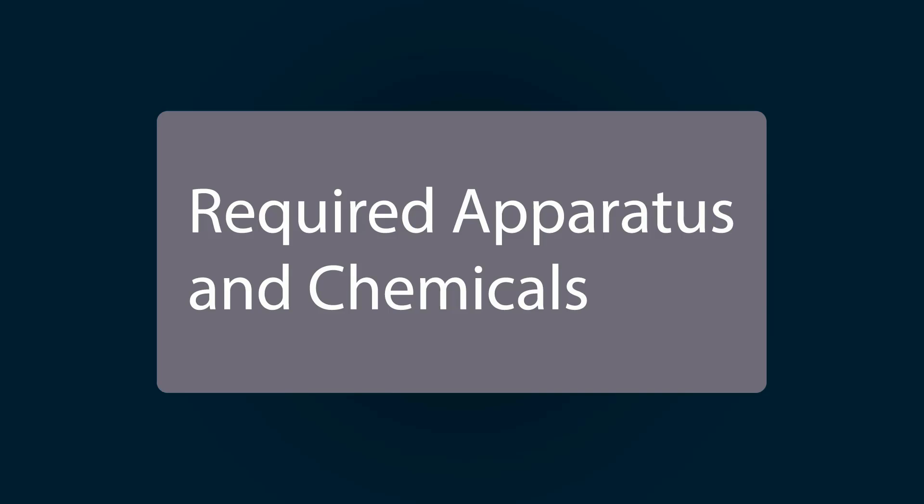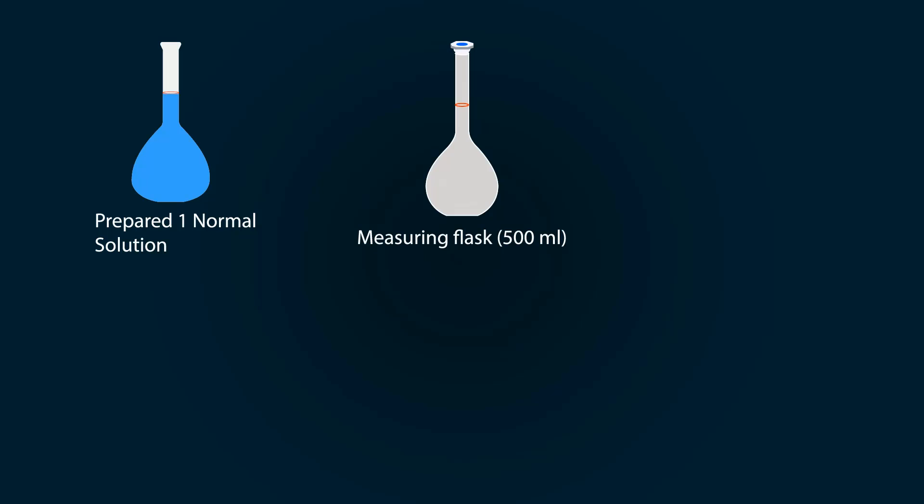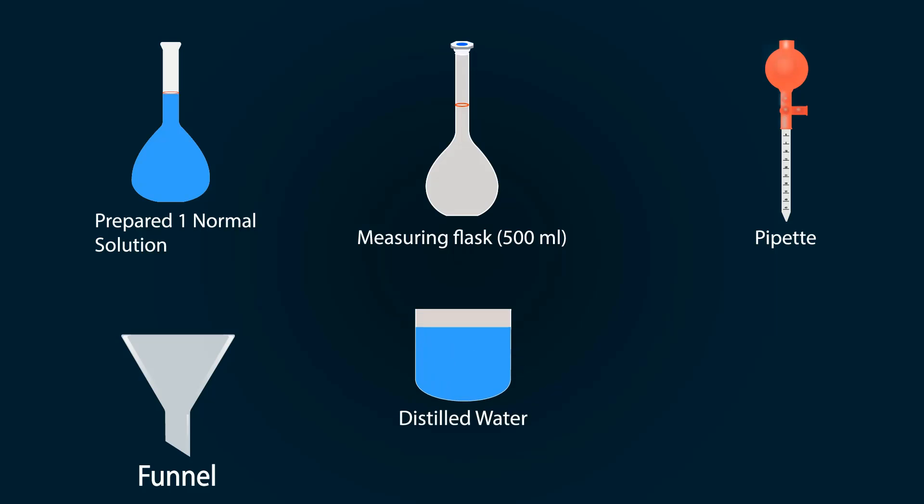The required parameters and chemicals include prepared one normal solution, a measuring flask of 500 ml, a pipette, a funnel, distilled water in a beaker, and storage tank.